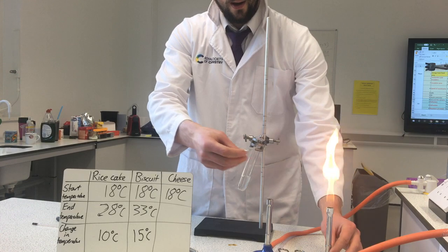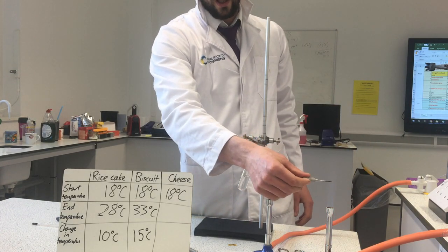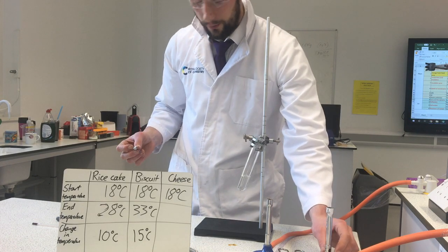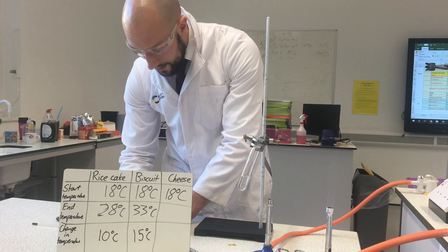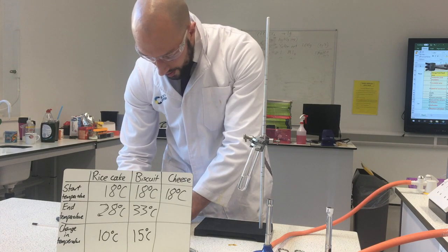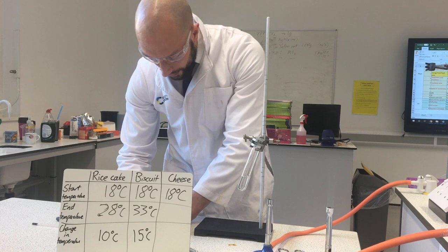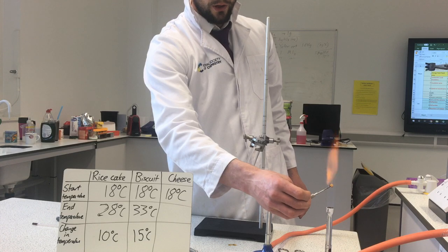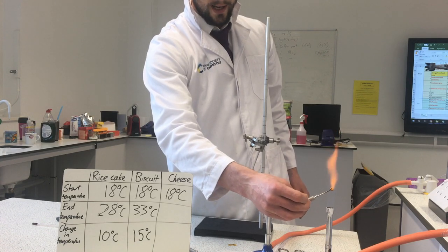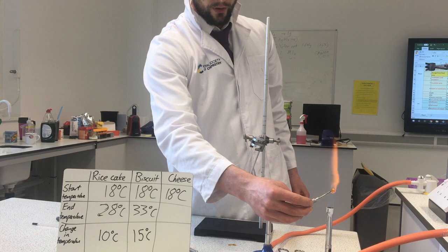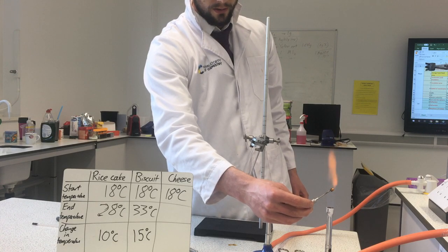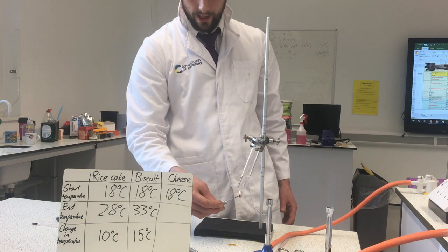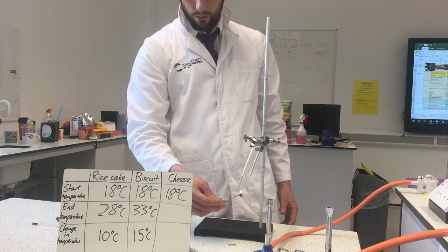I'm going to take my last pin, heat it hot so I can stick it into my food. My pin is nice and hot — I'm going to stick it into my last food, which is a piece of cheese. Cheese contains a little bit of carbohydrate and a little bit of sugar, but it's pretty much all fat. It's a different nutrient to what we had in the other ones. Let's get that cheese burning. My cheese is burning nicely — I'm going to use it to heat the water.